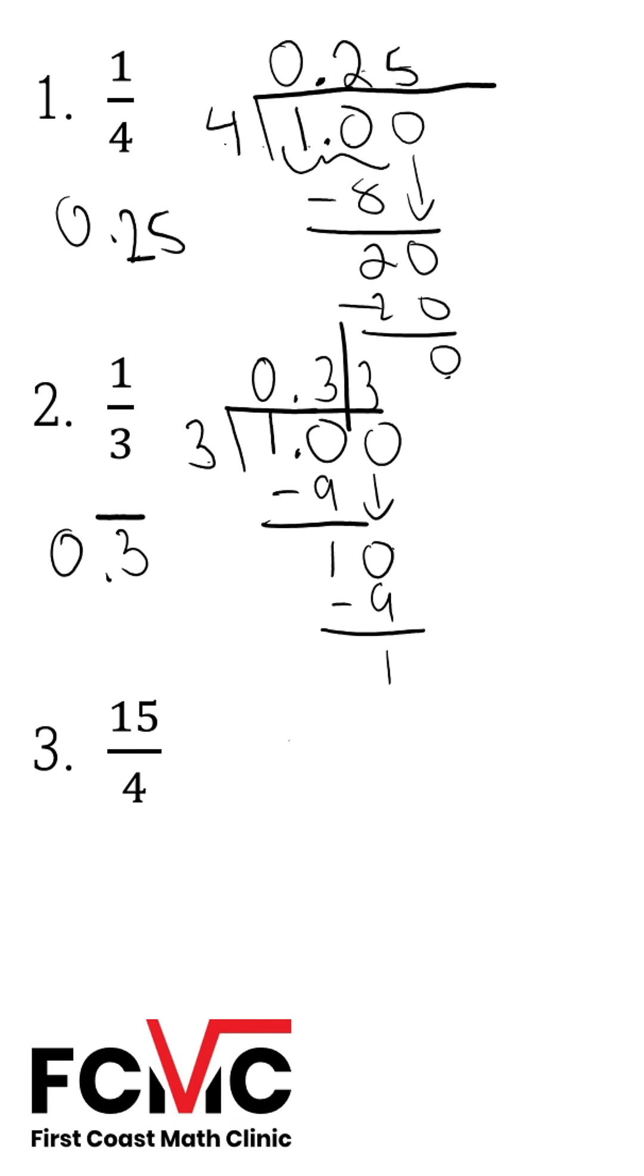With three, we have 15 over four. So we're going to divide 15 by four. Four goes into 15 three whole times. We get 12. Subtract, we have three left over. Now let's put a decimal to the right of the 15, to the right of the three. Bring down a zero.